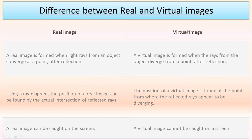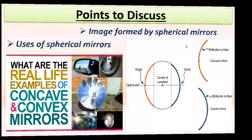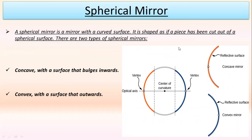When we study the characters or properties of images, we need to write what kind of image is formed — whether real or virtual. These were the things we needed to understand related to plane mirrors and image formation. Now we are moving to the discussion of spherical mirrors, which have a curved reflecting surface.